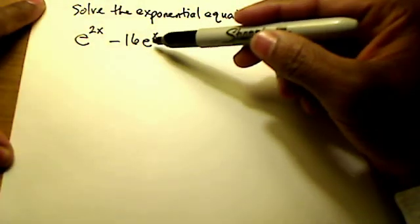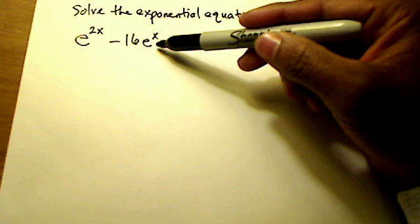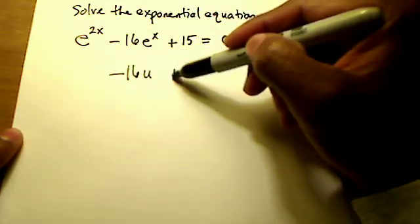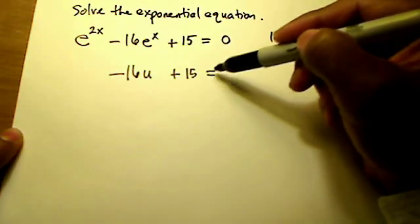If we do that, you can see that this e to the x right here can simply be replaced with u, so that middle term turns into minus 16u plus 15 equals 0.